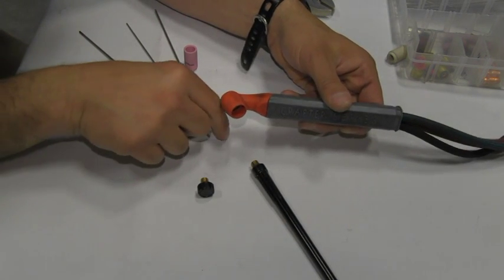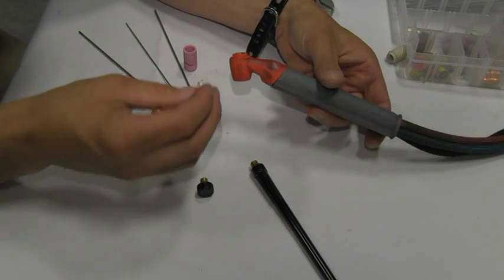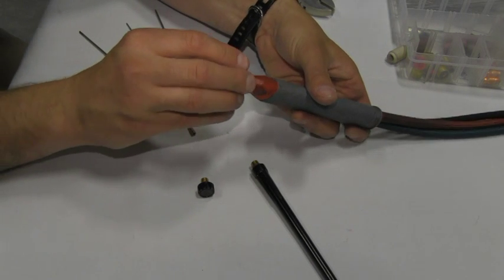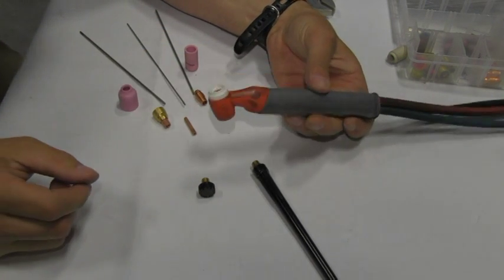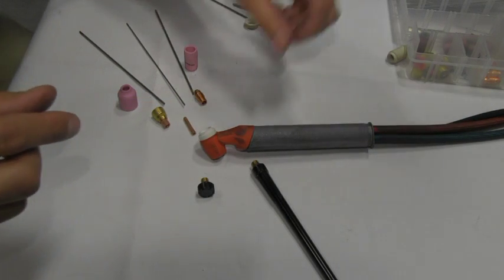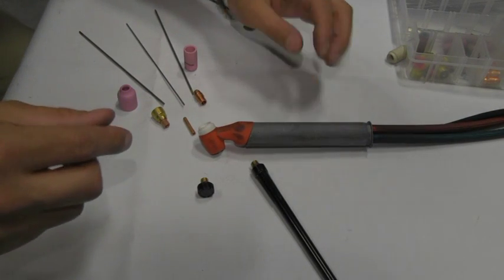Next is the heat shield. The heat shield is installed right on the front of the TIG torch, just like so. And it does exactly what it says. It shields the heat from the torch.